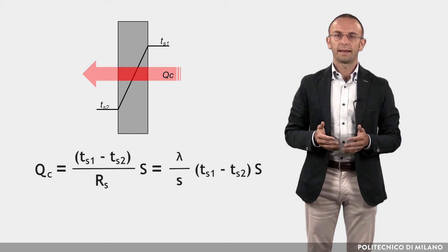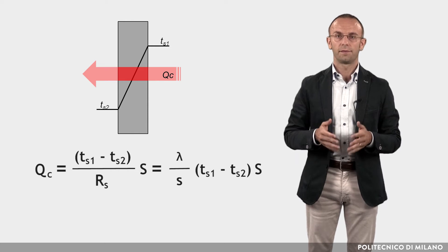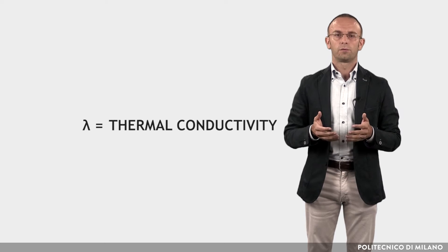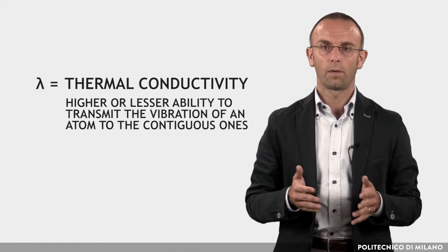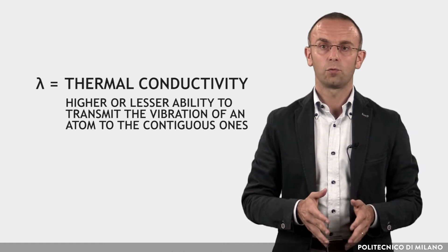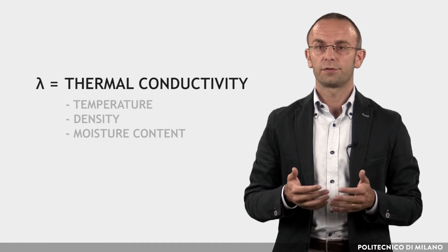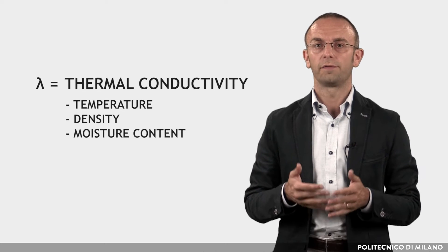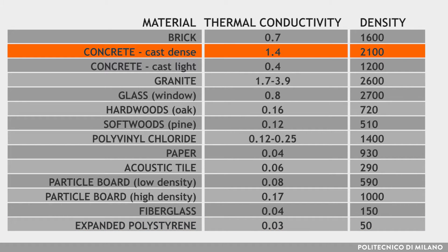The flux is directly dependent on the temperature difference and inversely dependent on the thermal resistance, and thus on the conductivity. The thermal conductivity is a specific property of each material and defines the higher or lesser ability to transmit the vibration of an atom to the continuous ones, which means to conduct the heat from one point to the other. It is dependent on the temperature, the density, and the moisture content of the material. Typically, low density materials such as polystyrene have low thermal conductivity, while materials with high density such as concrete have elevated thermal conductivity.